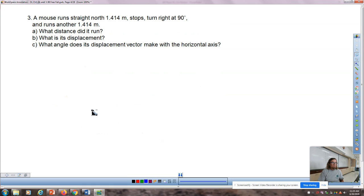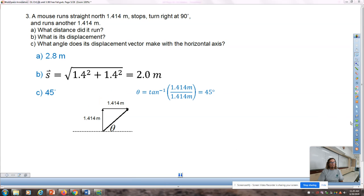Question number three: a mouse runs straight north 1.414 meters, turns to the right 90 degrees and runs another 1.414 meters. What distance did it run? You were probably looking at why 1.414? That's the number you heard from your math teacher that is root 2. What we have here is a 45-45-90 right triangle. The hypotenuse is the length of one of the sides times root 2, which means that distance is 2.